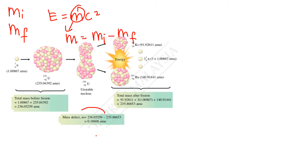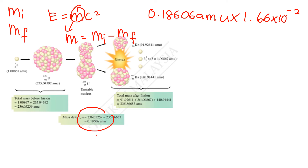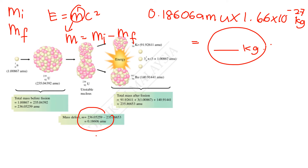From this nuclear fission reaction example, we know that we have 0.18606 AMU of mass defect. However, this mass defect is in AMU, so we need to change it to the SI unit of mass which is kilogram. We calculate by multiplying 0.18606 AMU by 1.66 times 10 to the power of negative 27 kg, and we will get the mass in kilogram. After that, we use this mass defect in the equation E = mc² to get the total energy released in Joules.